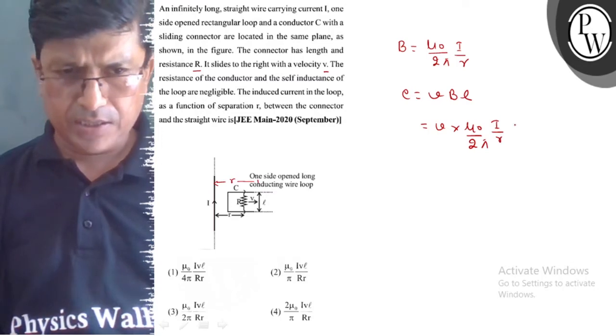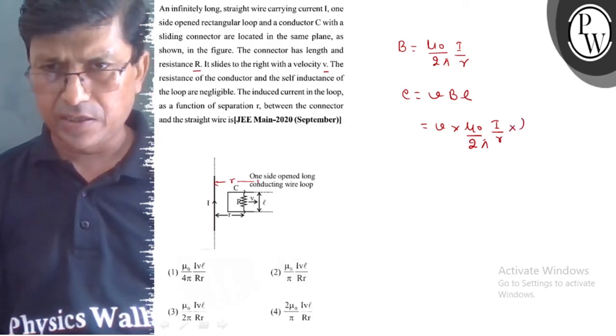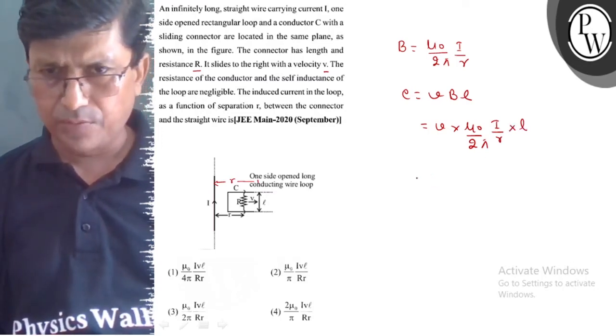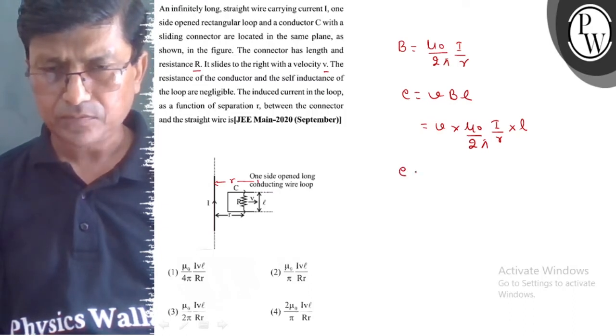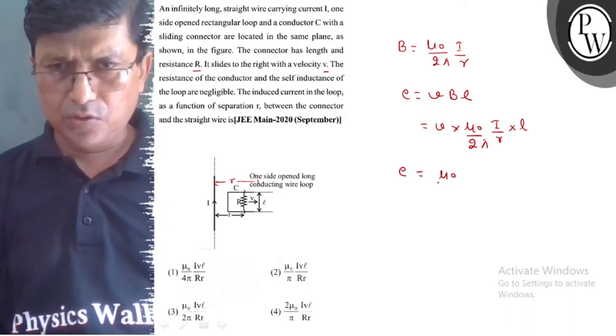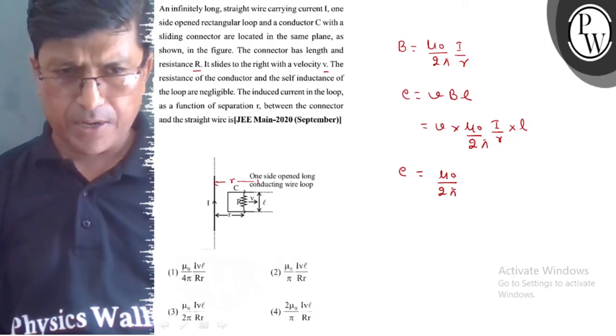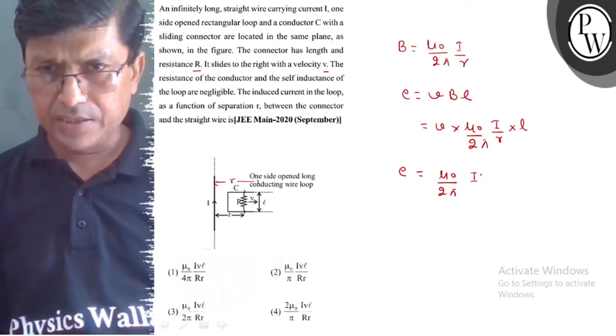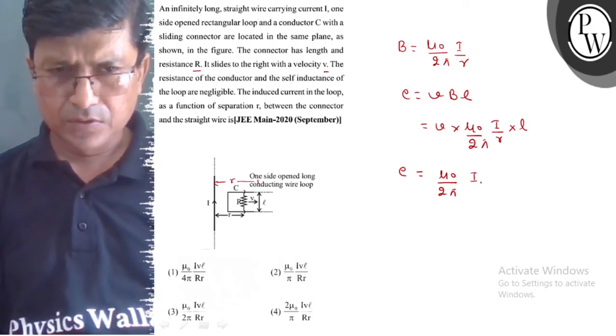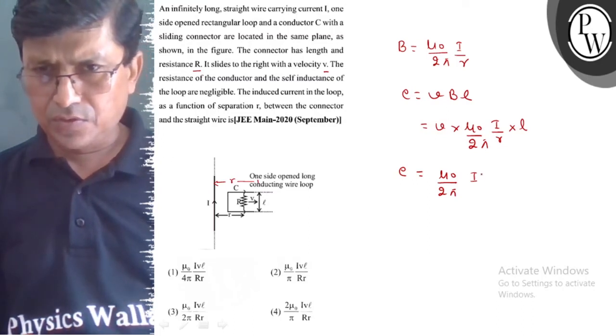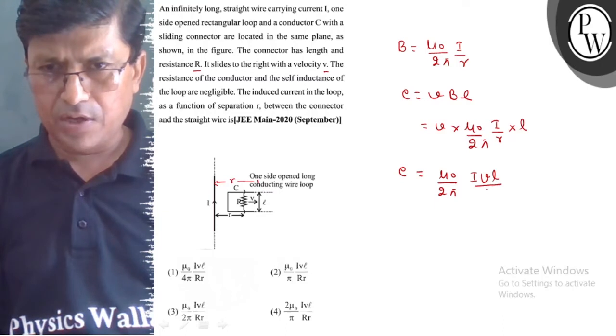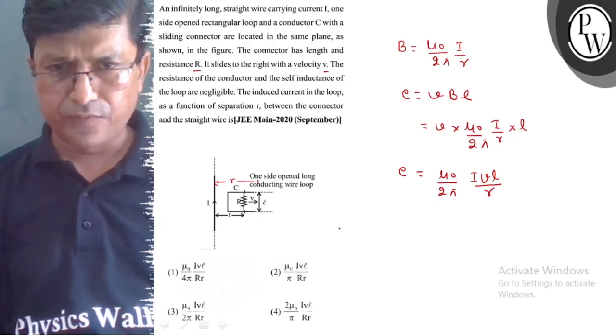If we calculate the value, μ₀ upon 2π times I times V times L upon small r. E equals - we will put the values here.